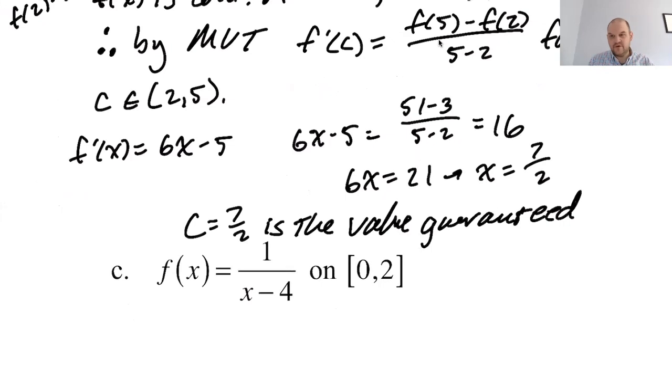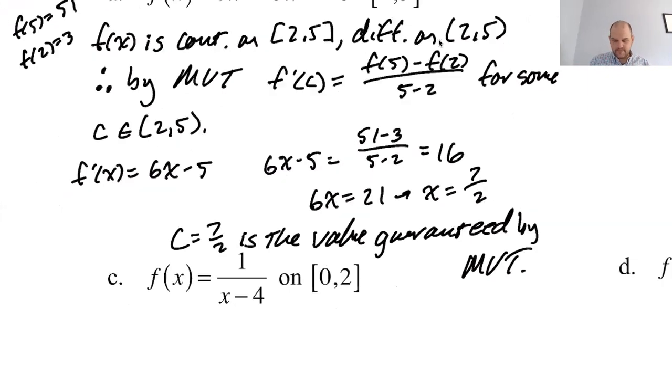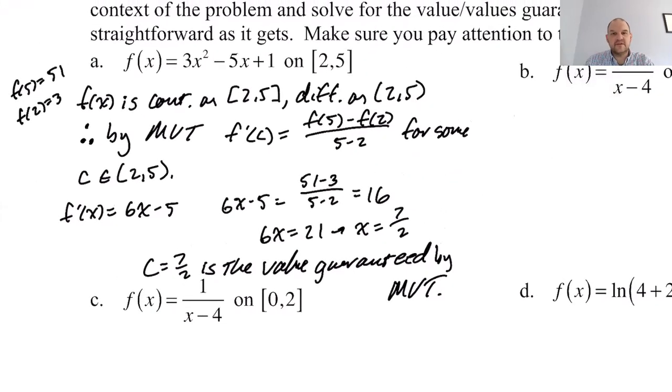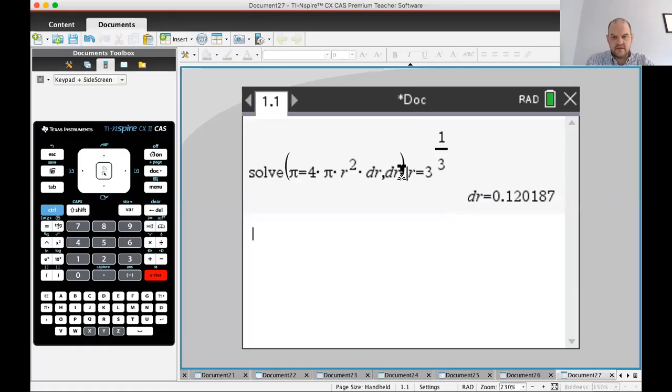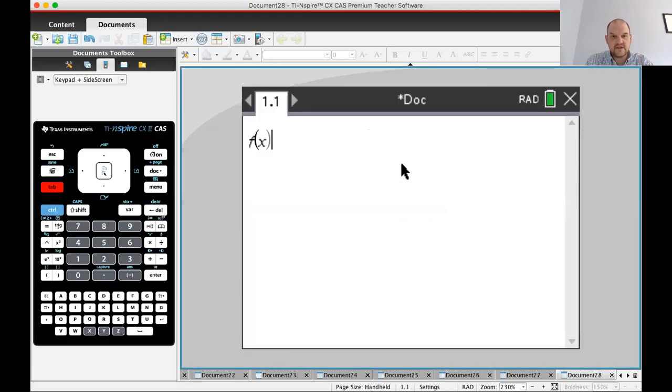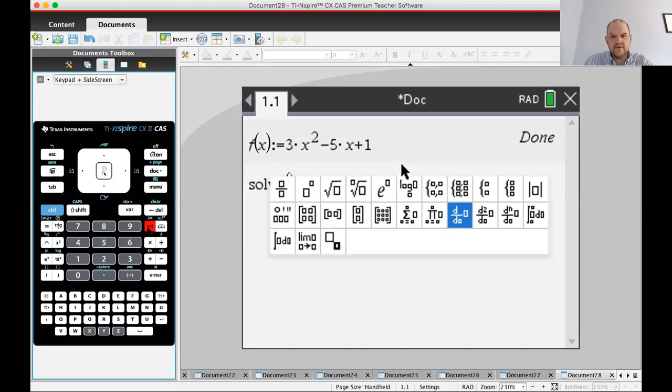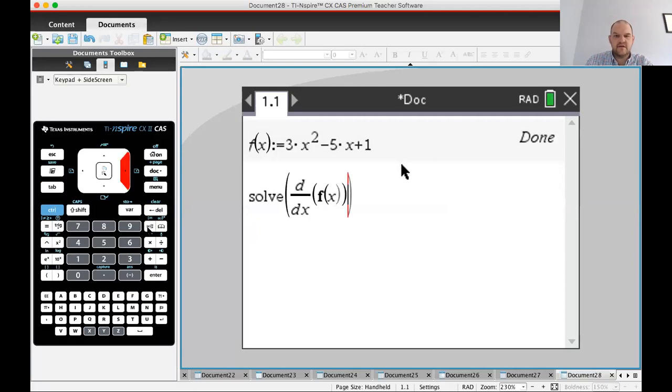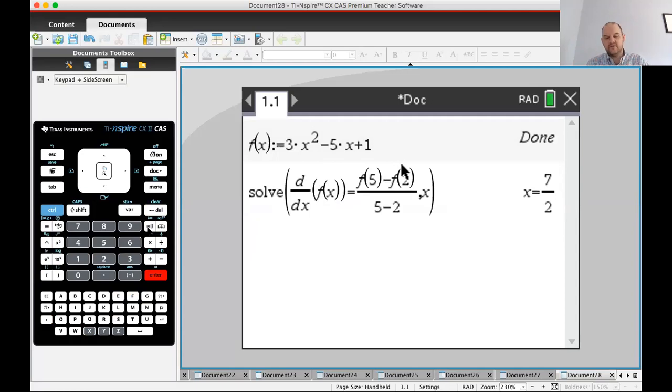C equals 7 halves is the value guaranteed by MVT. This page is going to take an hour. Should I check it? I guess so. So I'm going to switch over to a calculator page. So once we set this up, we'll be able to use it over and over. I want to solve the derivative with respect to x of f of x equals f of 5 minus f of 2 over 5 minus 2, solve for x. We get 7 halves. It's in the interval from 2 to 5, so that is our value. Good job us.